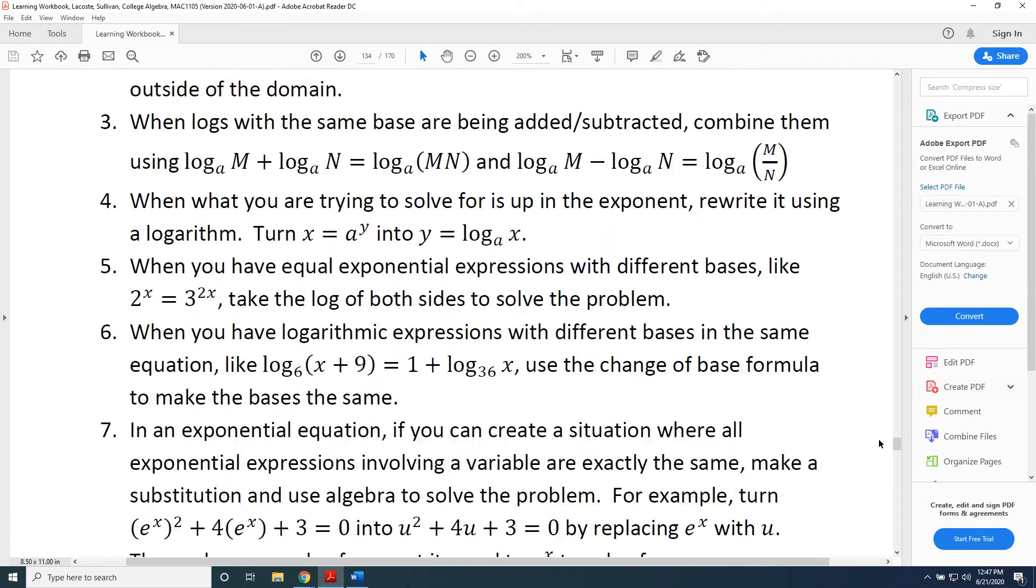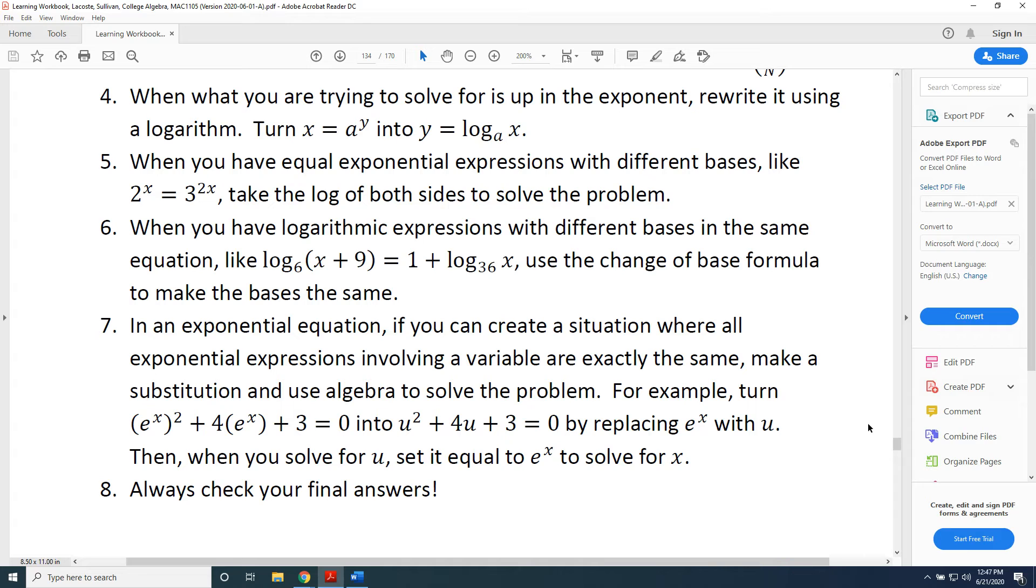Tip five, when you have equal exponential expressions with different bases, like 2 to the x power equals 3 to the 2x power, take the log of both sides to solve the problem. Then, using rule nine, you can get the exponent of the argument to move to be in front of the log.